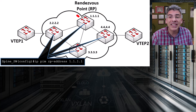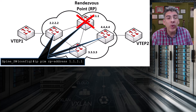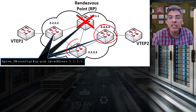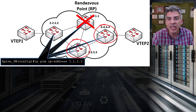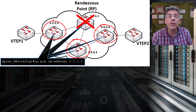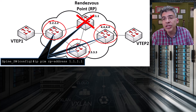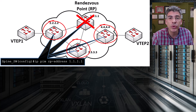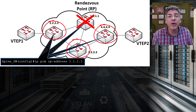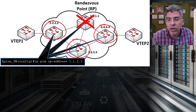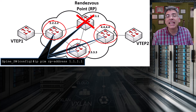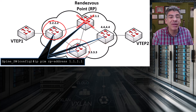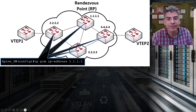And if it does fail, you have to go in and manually reconfigure all the devices in the underlay network to point to another device as the new RP. And if you don't have an active RP in your network, multicast will not work — and that's a big problem for VXLAN.